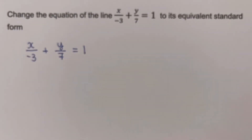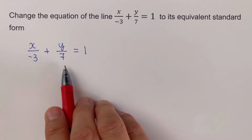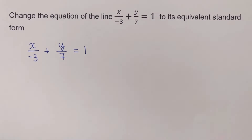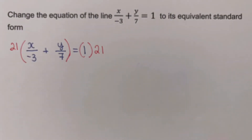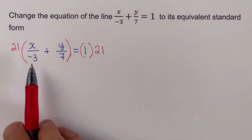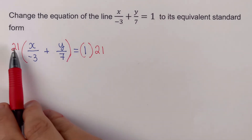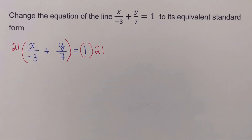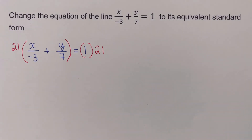We will multiply the denominators — we take their absolute value — so that's going to be three times seven. Taking the absolute value, three times seven is 21, so we are going to multiply both sides by 21. We then distribute the 21 to each of the terms inside the parentheses.